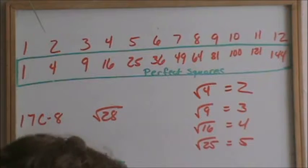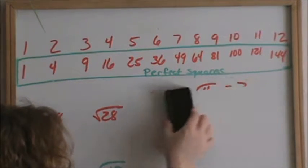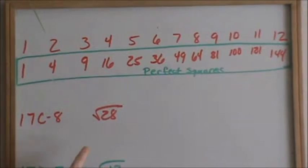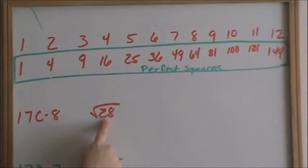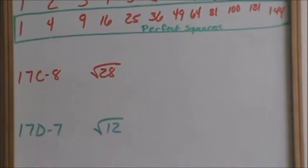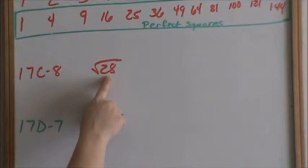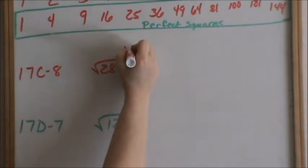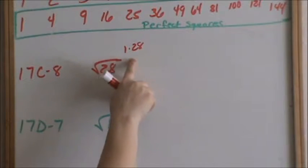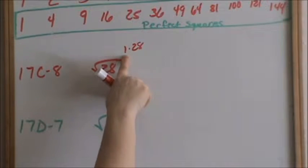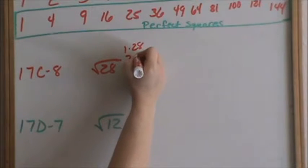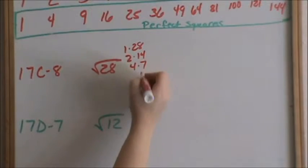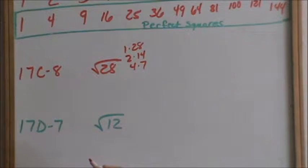In this lesson of simplifying radicals, we are looking for perfect squares. Let's look at number 8: the square root of 28. The instructions say to simplify the radical. When we simplify radicals, we are looking for perfect squares. The first thing you want to do is look at the factors of 28. Well, 1 times 28, and we will not be looking at factors dealing with multiplying by 1. We can also do 2 times 14, then 4 times 7, and that's it.